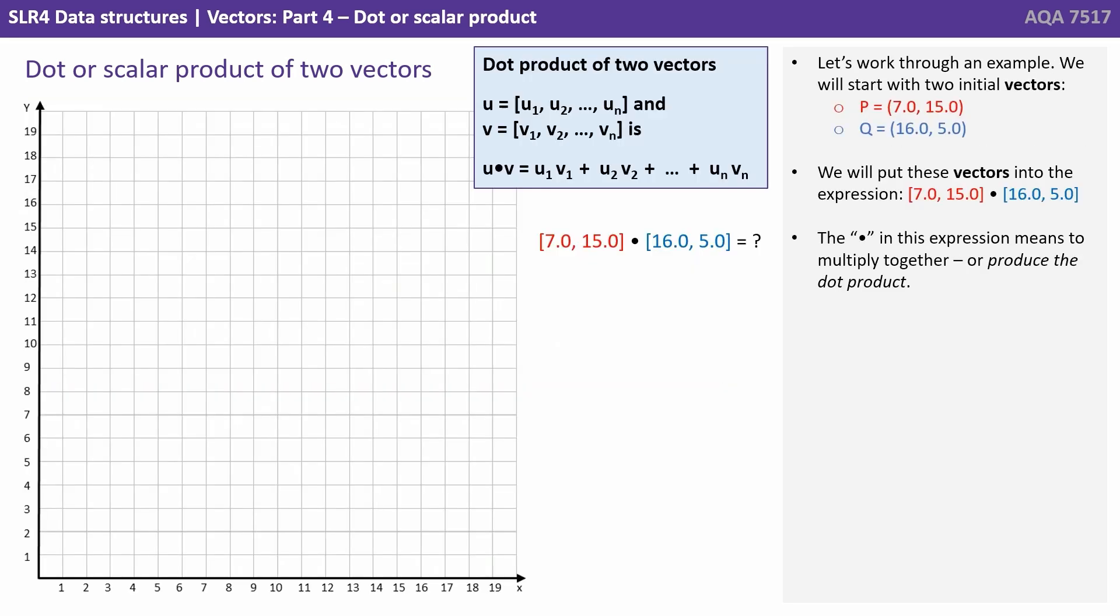Let's work through an example. We'll start with two initial vectors: P equals (7, 15) and Q equals (16, 5).